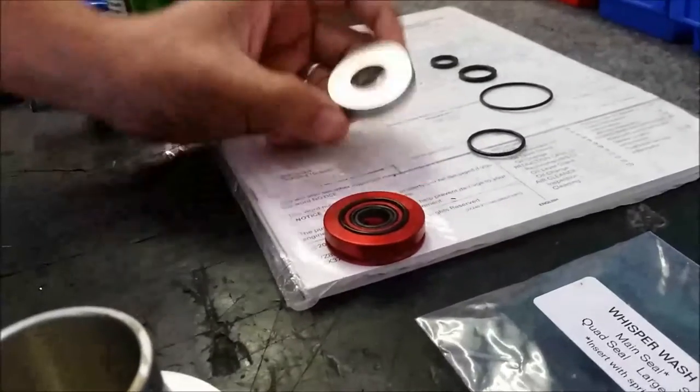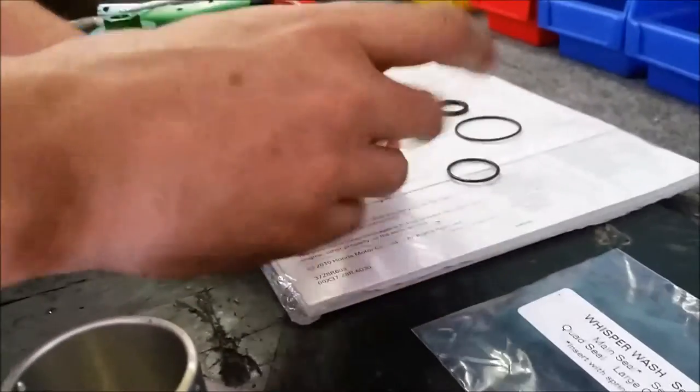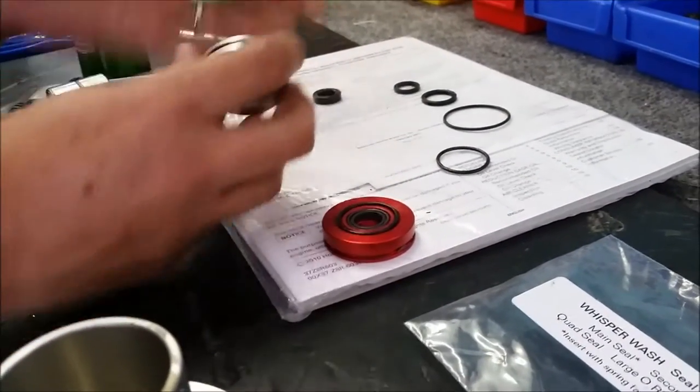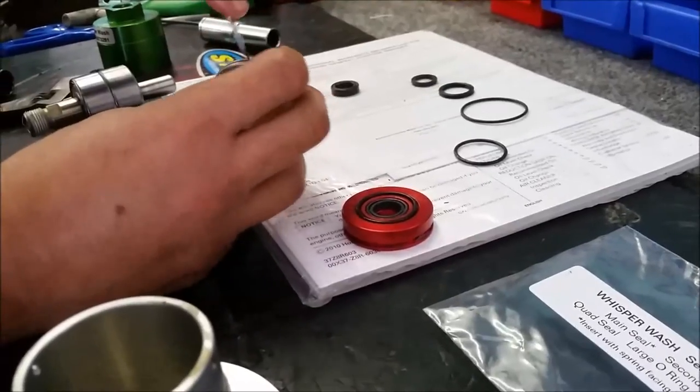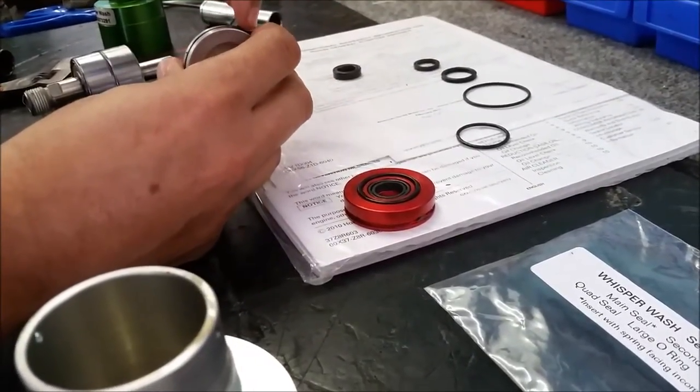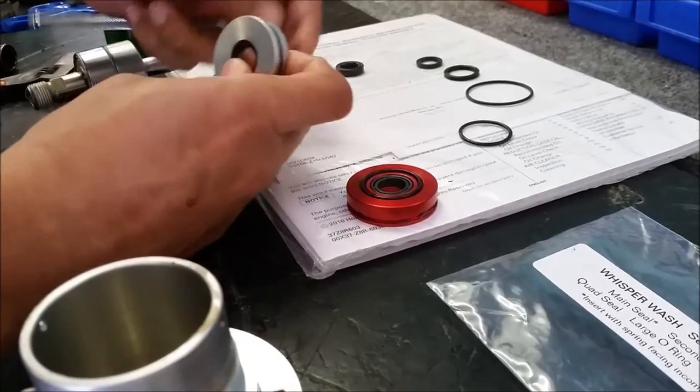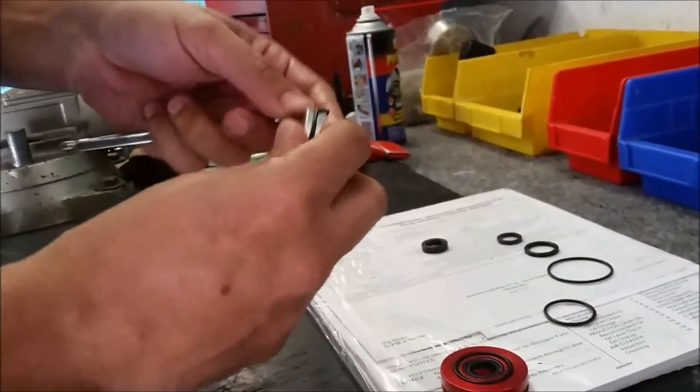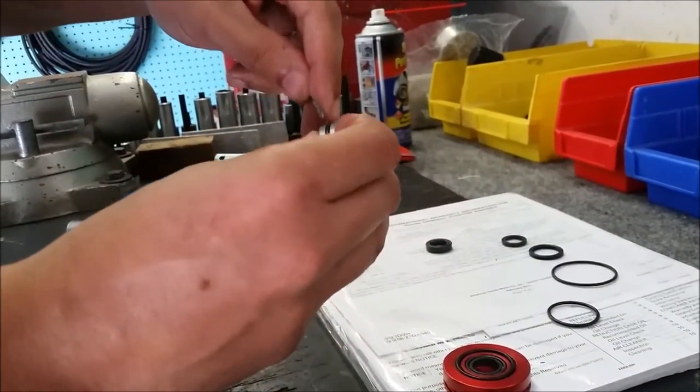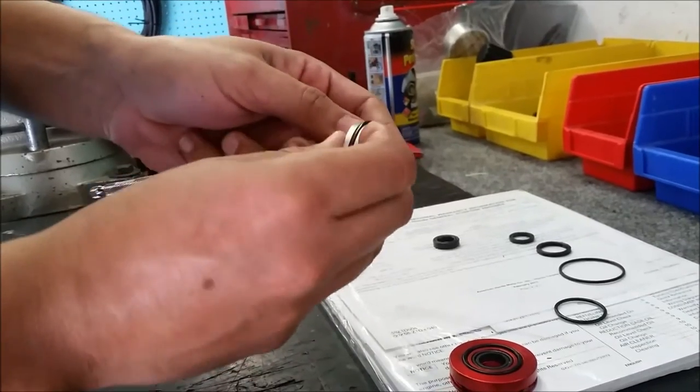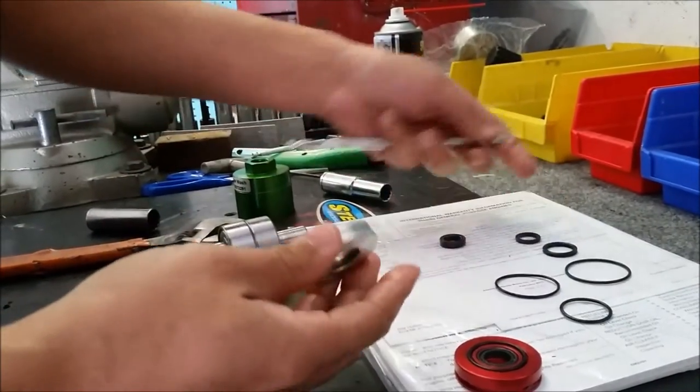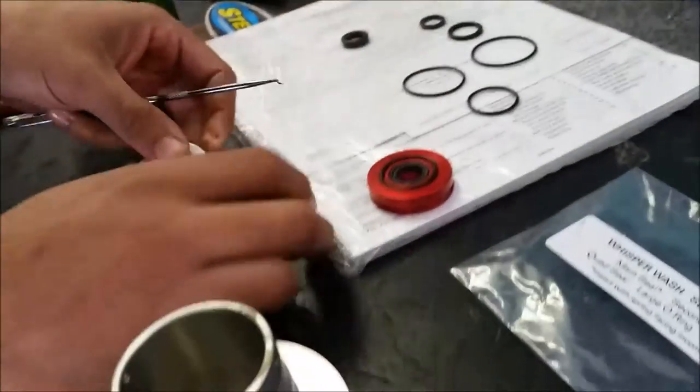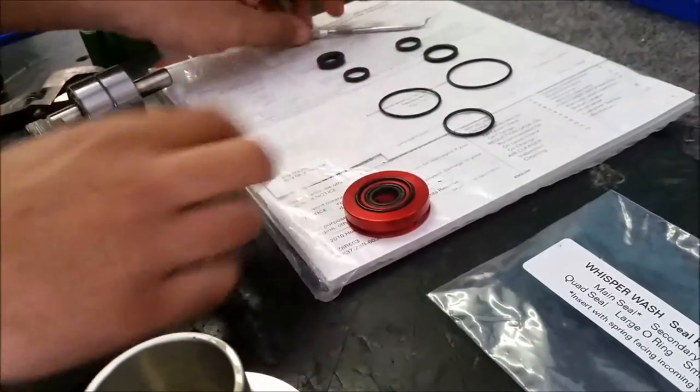So now we have the secondary seal which was just underneath this when it was assembled. And here we're going to have the large o-ring and the secondary seal. Same process, nothing too tough. We're going to go ahead and pull them. Once again, this is another real tight fitting seal. There it is.